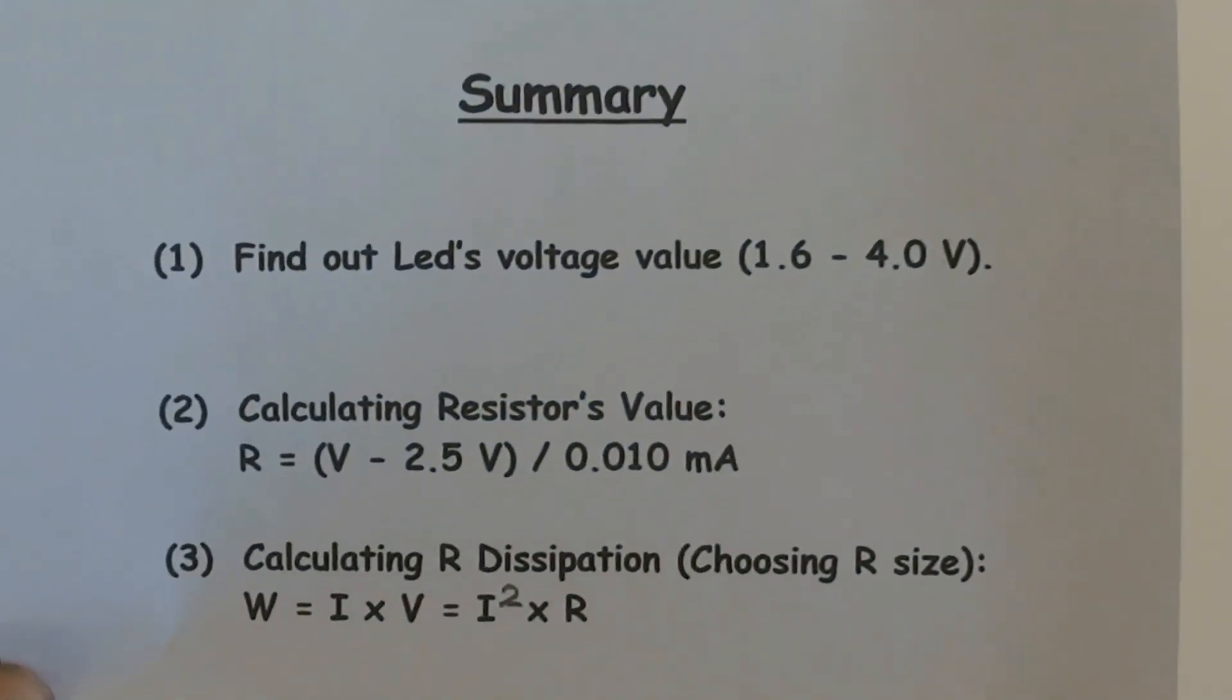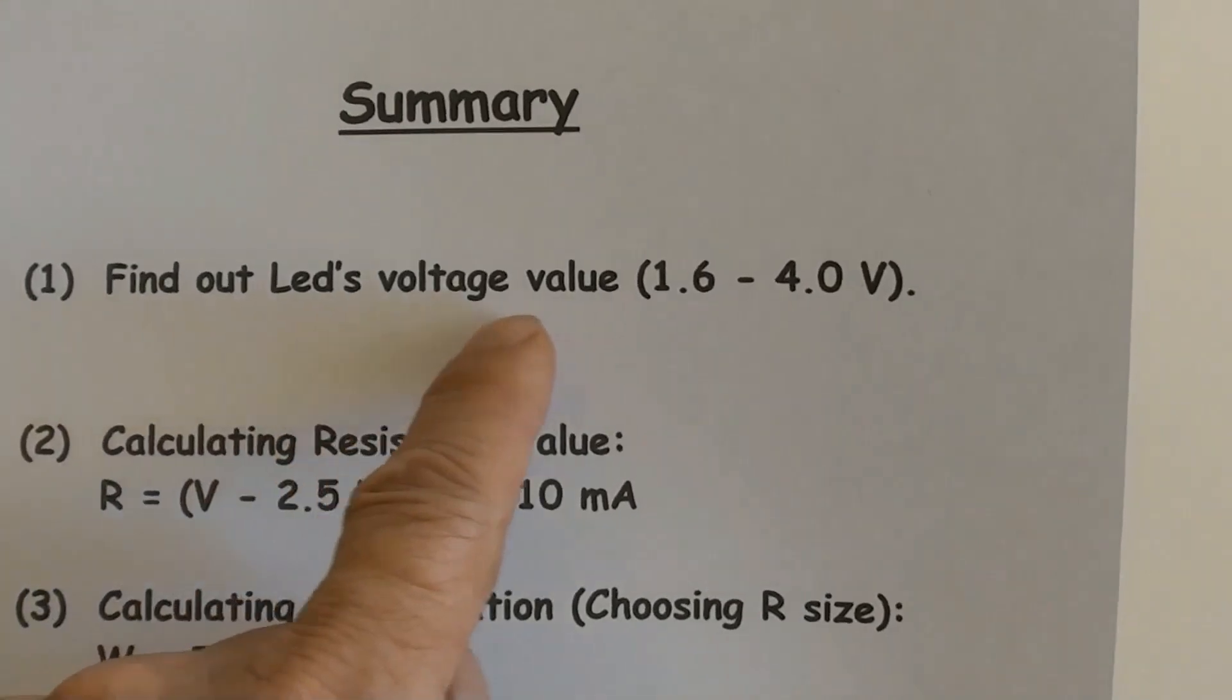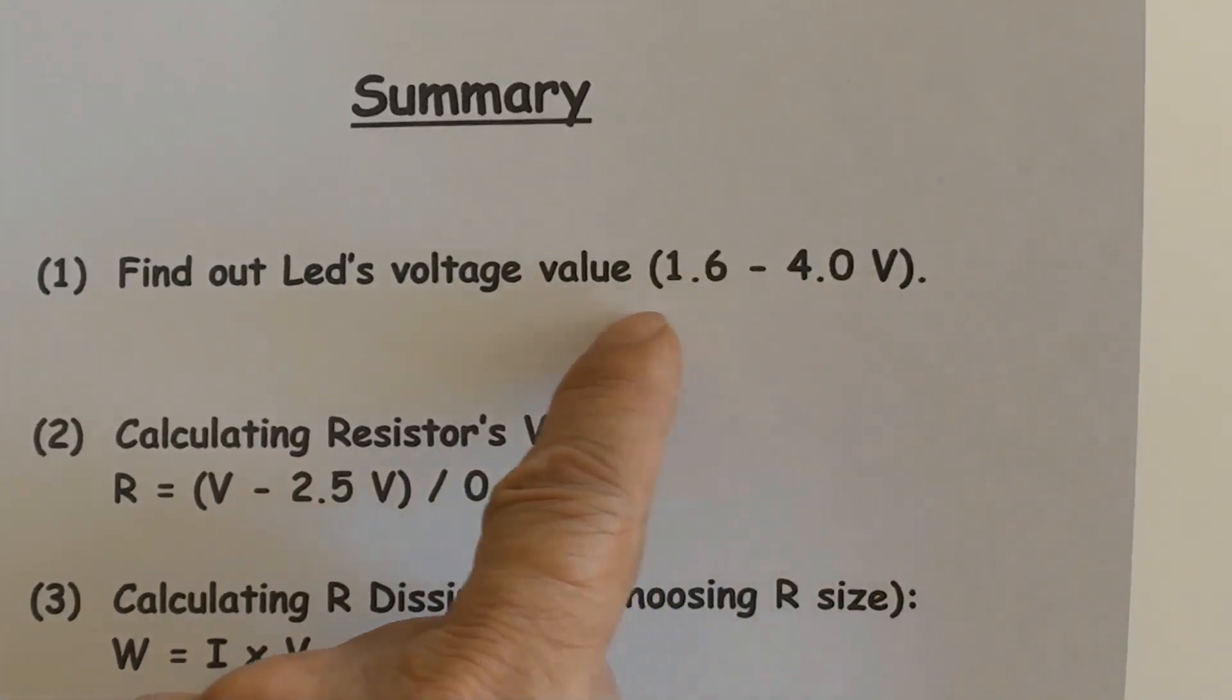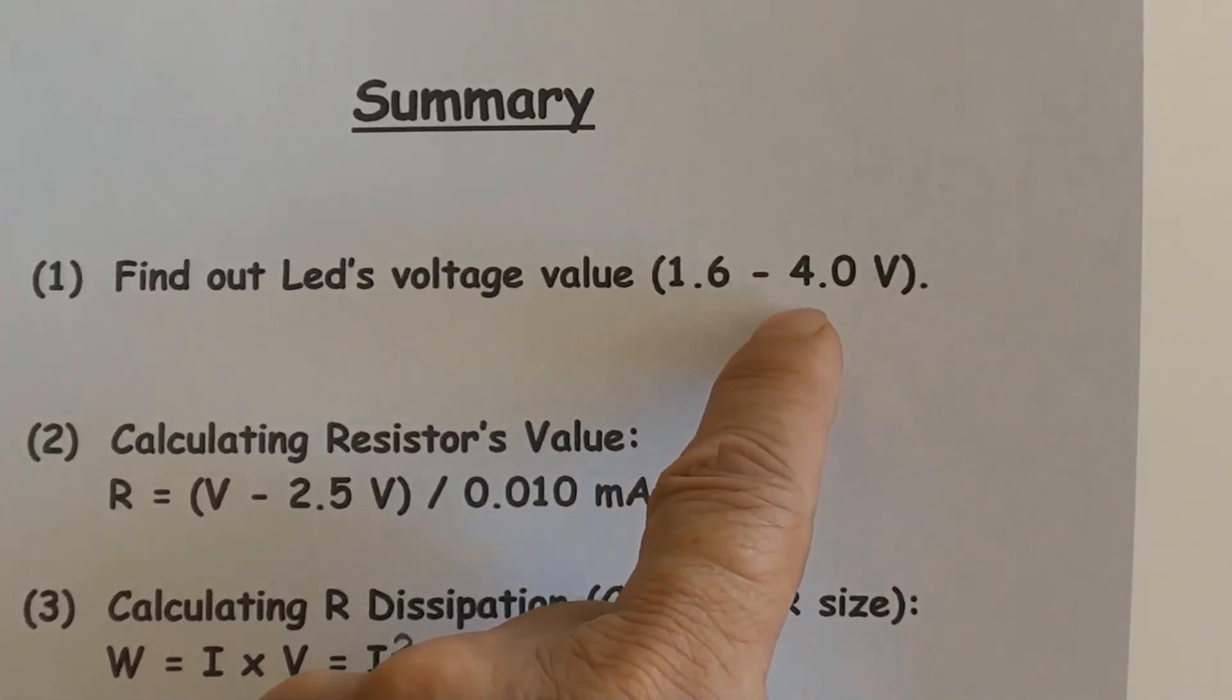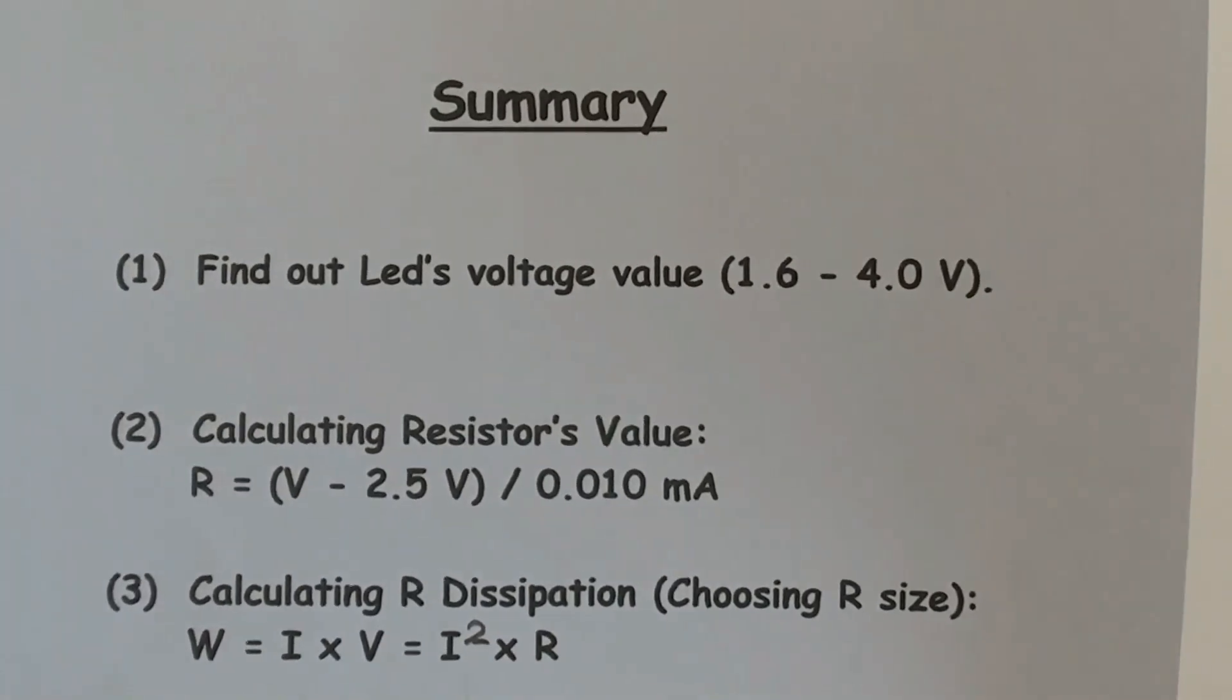Summary. First to do: find out the value of LEDs voltage either from datasheet or actual testing, such as an example of 2.5 volt for the green LED.